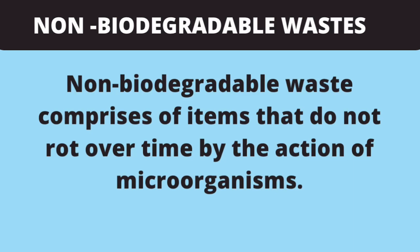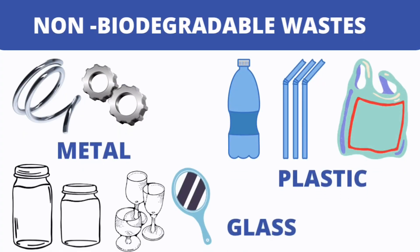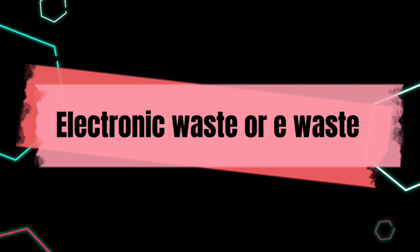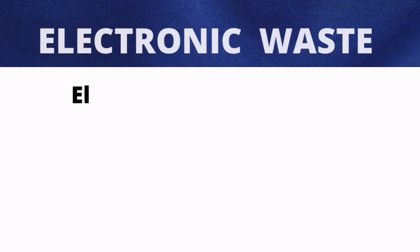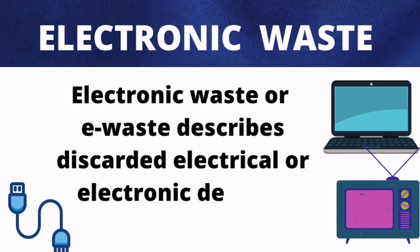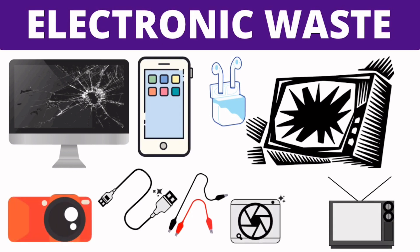The second category of waste is non-biodegradable waste, also called dry waste. These include items that do not degrade over time by the action of microorganisms — metal, glass, and plastic are a few examples. Apart from this, there is one more category called e-waste or electronic waste. All types of old and discarded electronic and electrical devices fall under this category — household appliances, TVs, mobile phones, laptops, and PCs are all examples of e-waste.